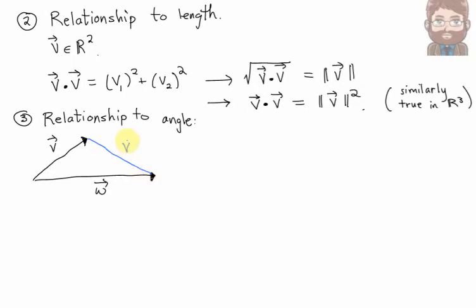Well, you probably remember that we could actually create a triangle with a vector V, and the vector W, and the vector V minus W as its three sides.